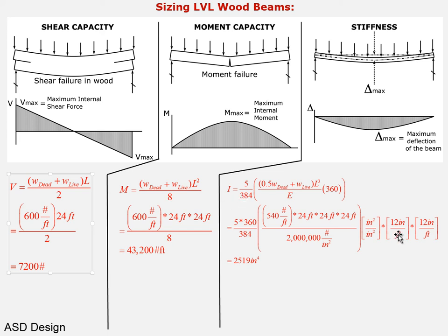Okay so the moment of inertia is I = (5/384) × (0.5w_dead + w_live) × L³ / E. So for one half w_dead plus w_live you'll recall we got 540 pounds per foot, and then I've taken each one of these L factors and written it out 24 feet times 24 feet times 24 feet, and E for this particular grade of material is 2 million pounds per square inch. Now to clean up the units I'm going to multiply the denominator by inches squared to get rid of this term, and then to keep it legitimate I have to put the same factor in the numerator.